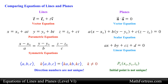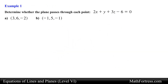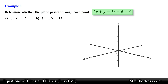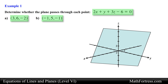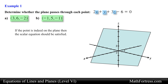Alright, with that said, let's go over some basic examples involving planes. Determine whether the plane passes through each point. In this problem we are given a scalar equation of a plane and are asked to determine if the plane passes through the following two points. We can determine this by substituting the coordinates of the points into the scalar equation of the plane. If the point is on the plane then the scalar equation should be satisfied; if not, it will not be satisfied.